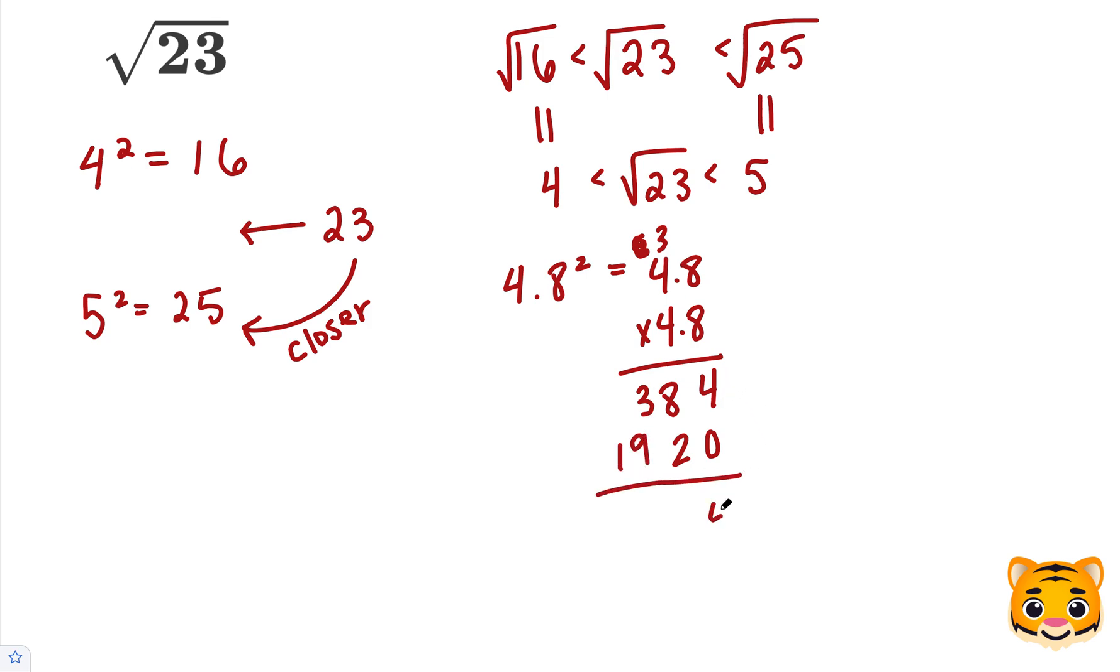Now when we add these together, we end up getting 23.04. And that's very close to 23, so we can say that 4.8 squared gives us approximately 23.